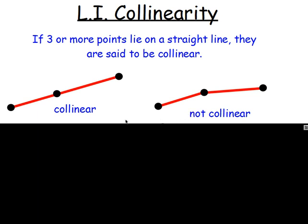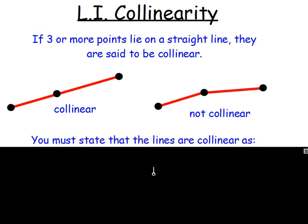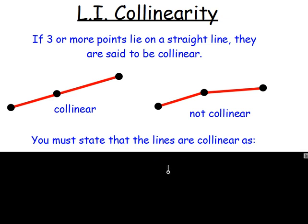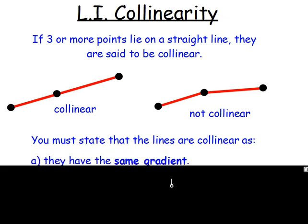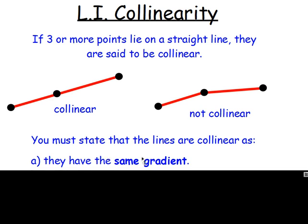There are two things that make a set of points collinear, and you have to think about them both. So you must state that the lines are collinear as, and these are the two reasons. The first one is that they have the same gradient.